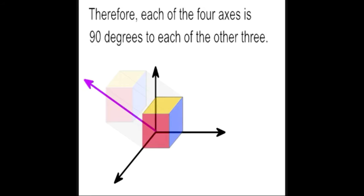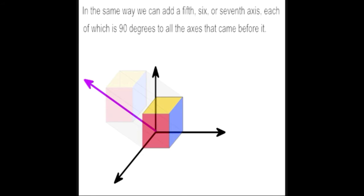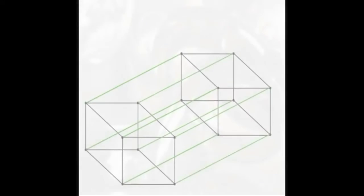Therefore, each of the four axes is 90 degrees to the other two. In the same way, we can add a fifth, sixth, or seventh axes, each of which is 90 degrees to all the axes that came before it.